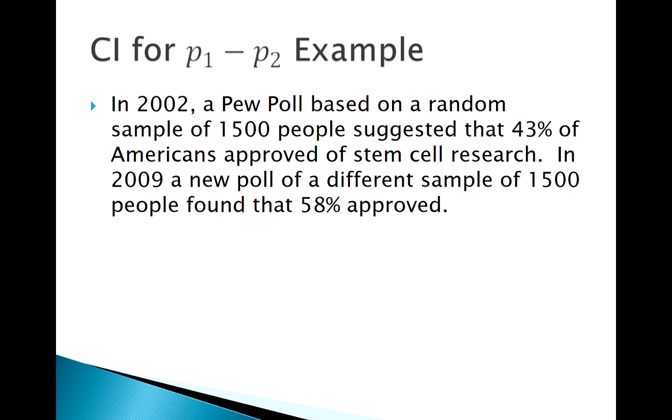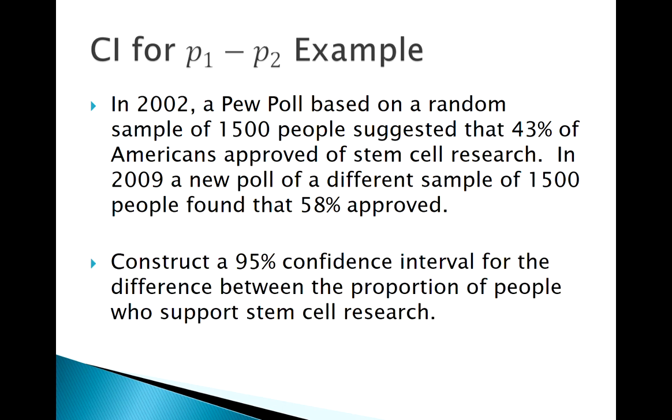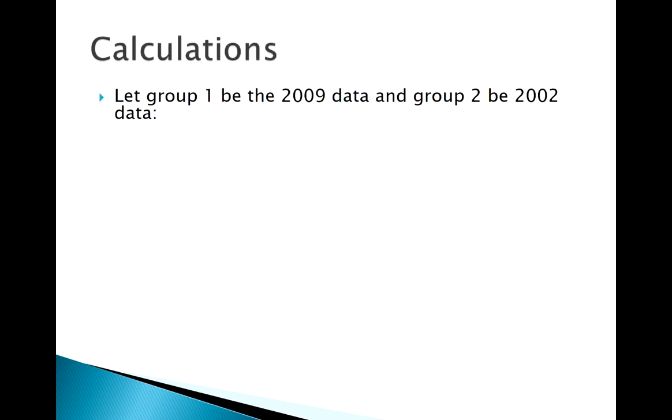approving in 2002, 58% approving later. Sample sizes of 1500 each time, so very large sample sizes. We want a 95% confidence interval to estimate our difference in proportions. We can let 2009 be group 1 and 2002 be group 2 - doesn't really matter as long as we stay consistent. I point